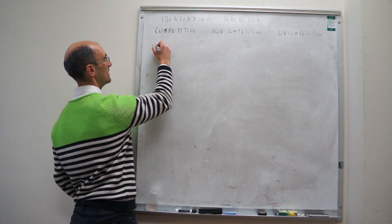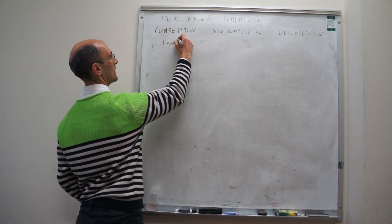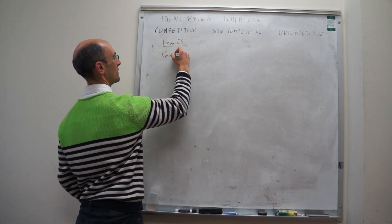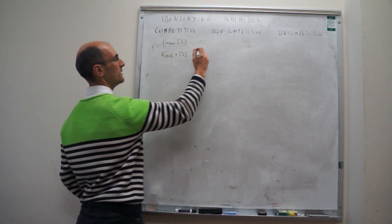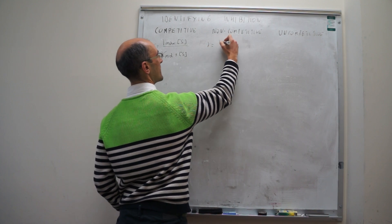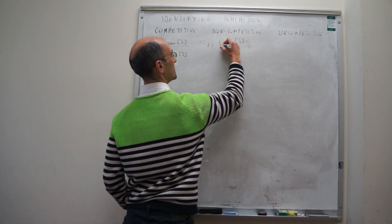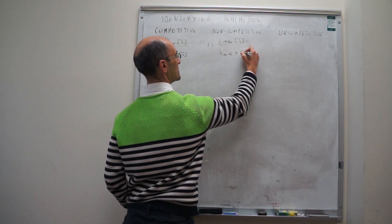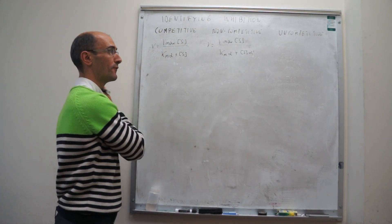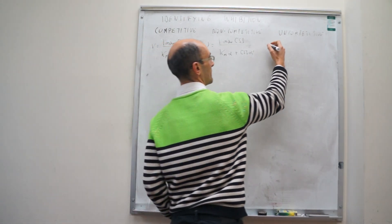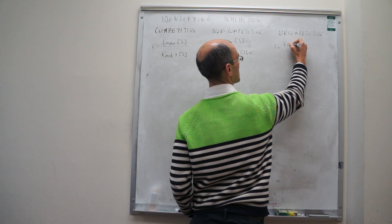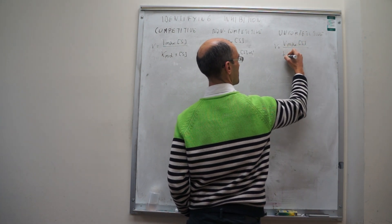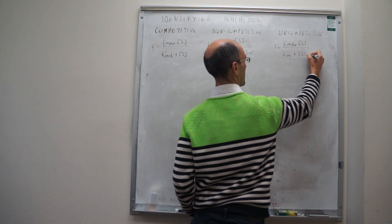The rate V is equal to Vmax times concentration of substrate over K_M alpha plus concentration of substrate — that is for competitive. Non-competitive: Vmax times concentration of substrate over K_M alpha plus concentration of S times alpha prime. And for uncompetitive, the rate equals Vmax times concentration of S over K_M plus concentration of S times alpha prime.